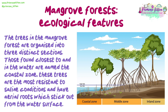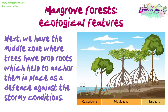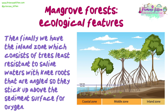The trees in the mangrove forest are organized into three distinct sections. Those found closest to and in the water are named the coastal zone; these trees are the most resistant to saline conditions and have aerial roots which stick out from the water surface. Next is the middle zone, where trees have prop roots which help to anchor them in place as a defence against stormy conditions. Finally, the inland zone consists of trees least resistant to saline waters, with knee roots angled to stick up above the sediment surface for oxygen.